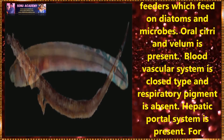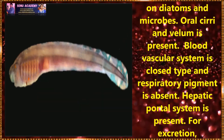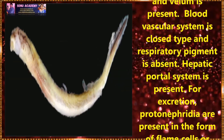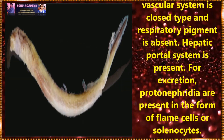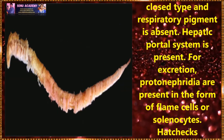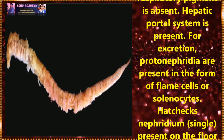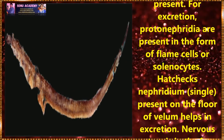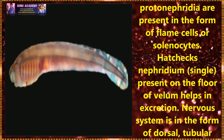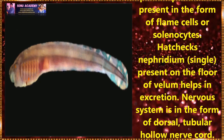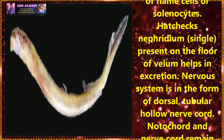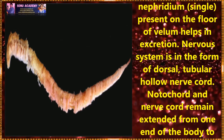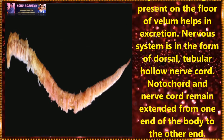The blood vascular system is of closed type and respiratory pigment is absent in this organism. A hepatic portal system is present. Protonephridia are present in the form of flame cells or solenocytes. Hatschek's nephridium, a single structure present on the floor of the velum, helps in excretion.